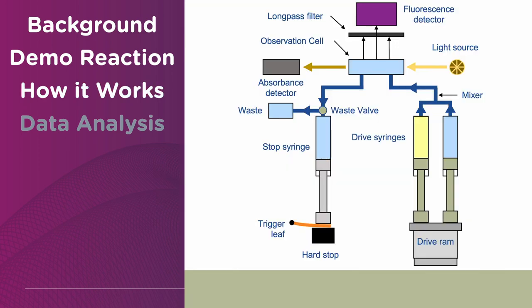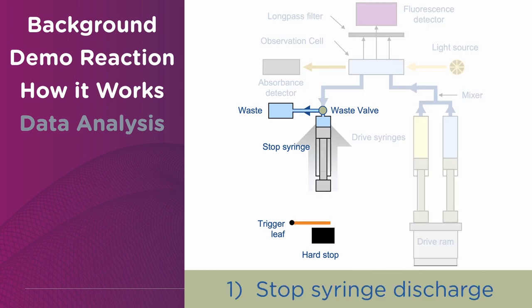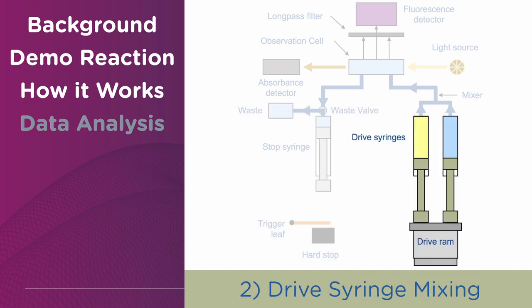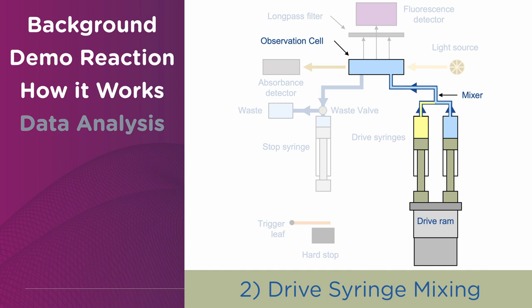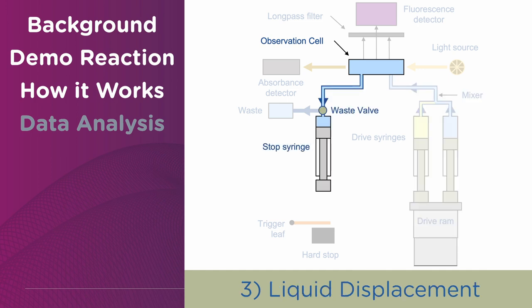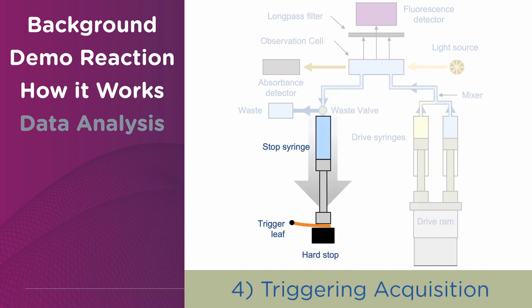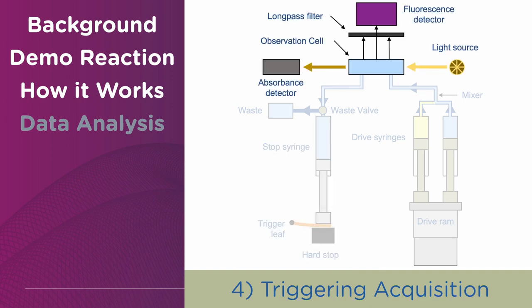A standard stop-flow mixing experiment, like recording absorbance or fluorescence, is automated and the runs are repeated in a sequence where first, the excess liquid is discharged from the stop syringe into the waste, and then defined volumes from drive syringes are mixed into the observation cell. This creates a displacement of liquid, which then travels down the stop syringe, activating signal acquisition with minimal millisecond dead time.